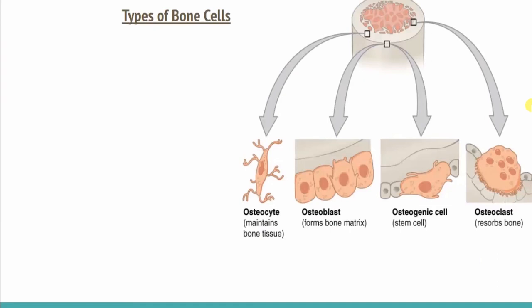We have seen the bone structure which is present, and we have done a classification of the bone — we classified the three types. Now we will continue to see the bone, specifically the cells of the bone and what their functions are.